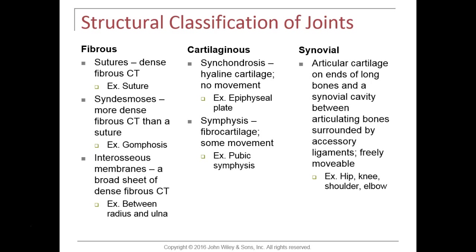Synovial joints have bones containing articular cartilage which surrounds the ends of long bones. They contain a joint cavity — also called a synovial cavity — between the adjoining bones, and this cavity is filled with synovial fluid. Synovial joints are the typical joints you're familiar with: your knee, your elbow, your hip joint, your shoulder — these types of joints.